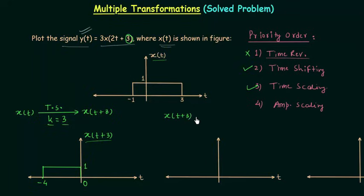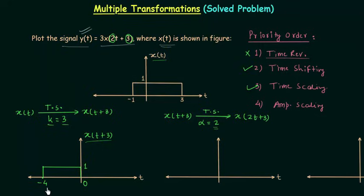The signal is x(t+3) and we will perform time scaling with alpha equal to 2, because we are multiplying 2 to the time. So the new signal is x(2t+3), and in the case of time scaling we have to divide the time axis by alpha. Alpha is equal to 2, so we will divide minus 4 by 2 and 0 by 2, giving us minus 2 and 0. The amplitude will remain the same, which is equal to 1, so we have amplitude 1 in the case of signal x(2t+3).